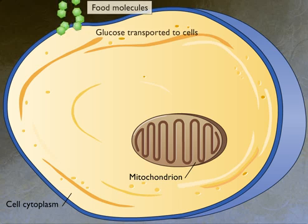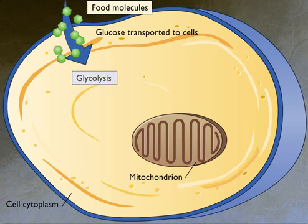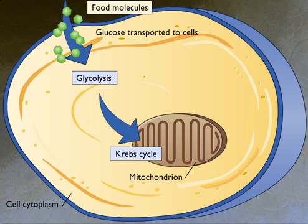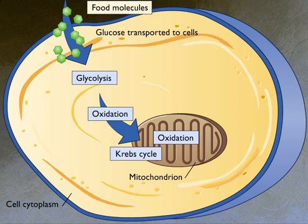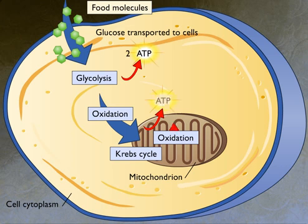Cells obtain energy during cellular respiration by oxidizing food molecules such as glucose. The energy derived from these oxidation reactions is used to form ATP.